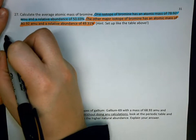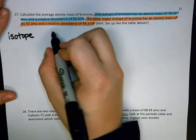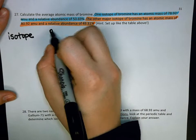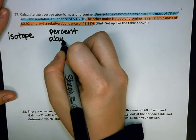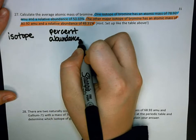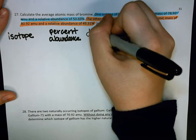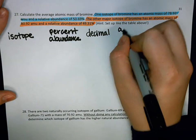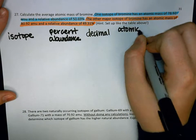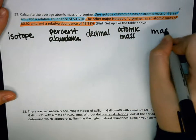First column is going to be isotope. The next one will be percent abundance. Next is decimal. And then we get the atomic mass. And then the last column is for mass.